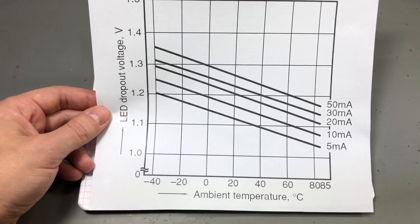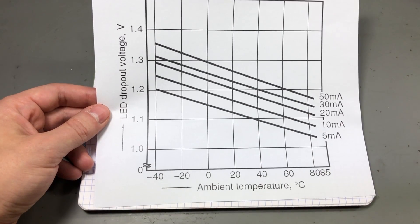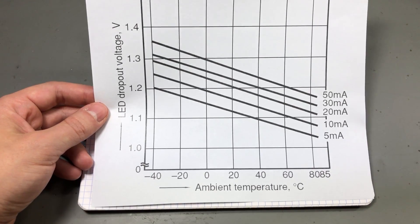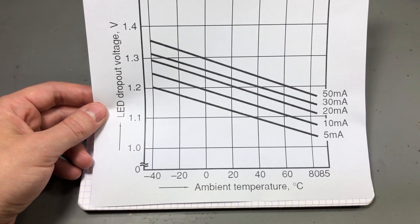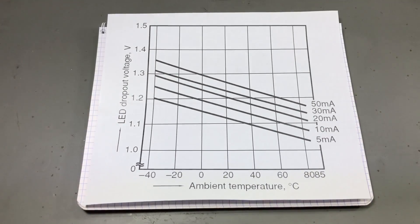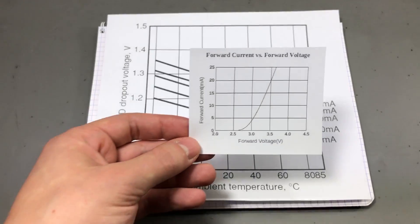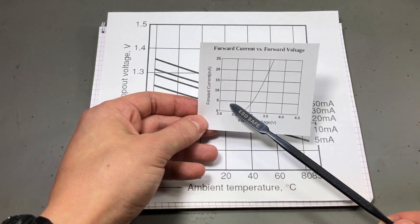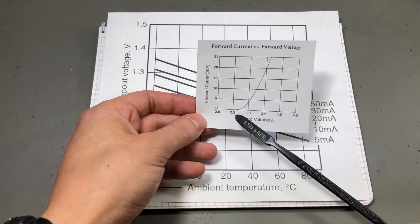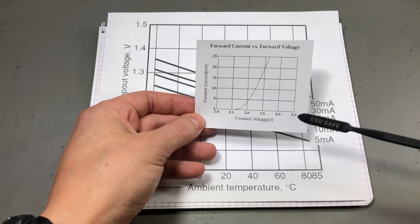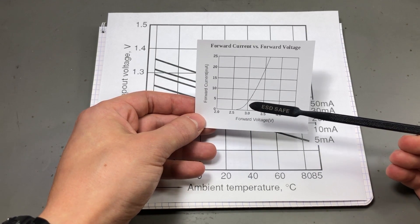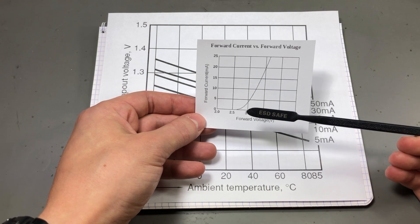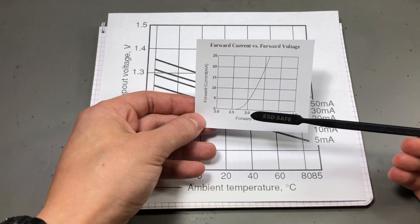If the forward voltage drops then the forward current will increase heating the LED even more and the cycle continues. And there is another property that we need to be aware of. The exponential relation between forward voltage and forward current. And this tells us that with just a small change in forward voltage we get a big change in forward current.